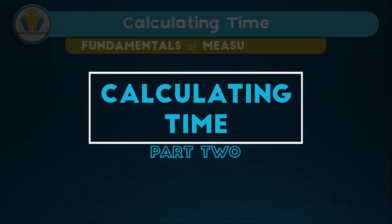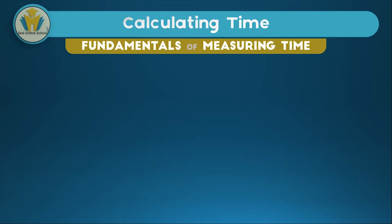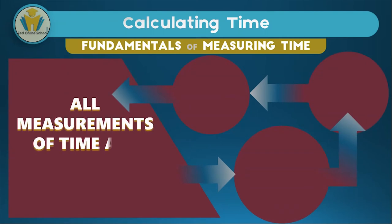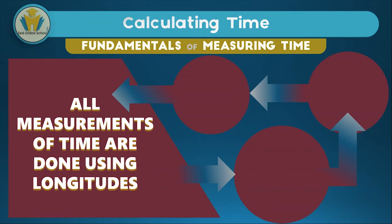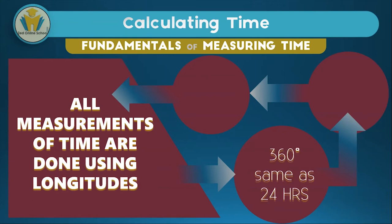Now let's look at how calculating time is done. Before any calculations, it's very important that we get the fundamentals of measuring time. There are four principles you should always remember when calculating time in earth geometry. First, all measurements of time are done using longitudes. Second, one day — which is 24 hours — equals one rotation of the earth, so 360 degrees is the same as 24 hours.